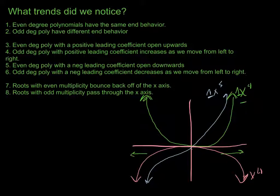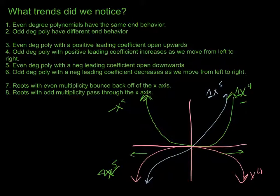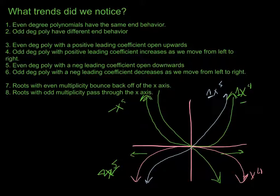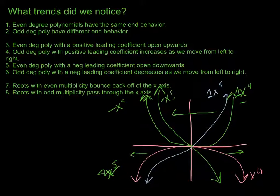What about an odd-degree polynomial with a negative leading coefficient — negative x to the 5th? When we plug in a negative value, we have a negative times a negative, giving a large positive number. So it starts positive and then drops down and becomes negative. We've essentially reflected x to the 5th over the y-axis, and so an odd-degree polynomial with a negative leading coefficient will decrease as we move from left to right.